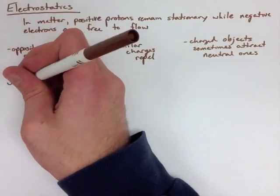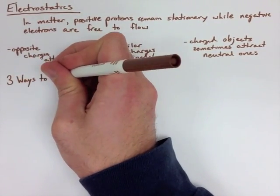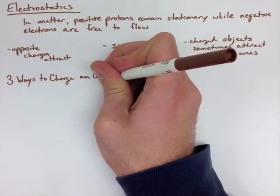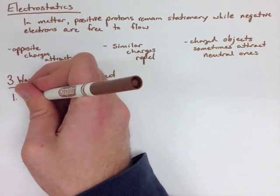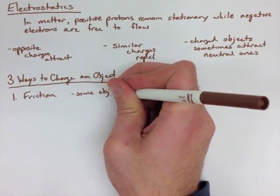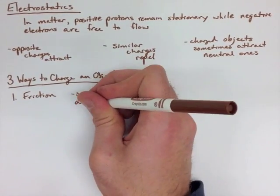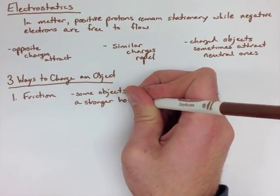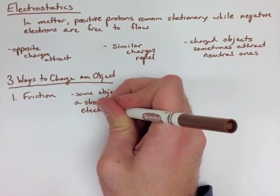The next thing we're going to look at are the three ways to charge an object. We've talked about all of these before, but we're going to review them all. The first would be friction, and this is when two objects are rubbing together. Some objects hold electrons better than others, so when we rub those two objects together, for instance,